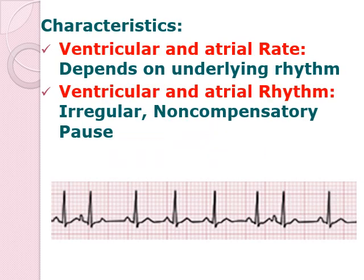Characteristics: your ventricular and atrial rate would depend on the underlying rhythm. Your ventricular and atrial rhythm has a tendency to become irregular, and what we refer to as a non-compensatory pause. There is a tendency for the PP interval to be shorter and then followed by a longer PP interval. Look at this example — the P-wave here and the P-wave here have a short distance. However, the P-wave from this contraction going towards this contraction has a longer distance, meaning it is not compensating for the signal which is delayed. Hence, it is referred to as a non-compensatory pause.